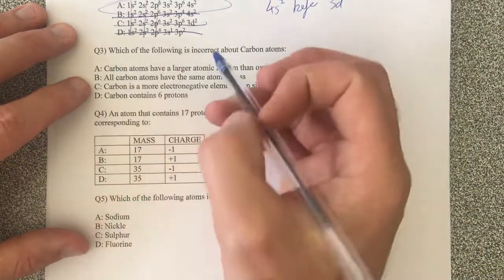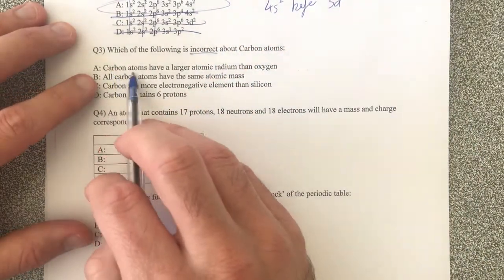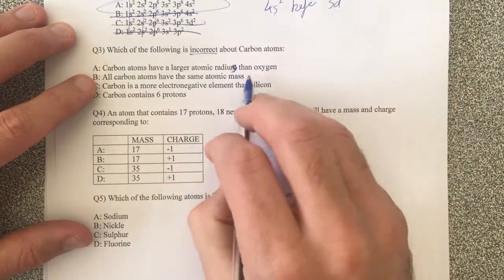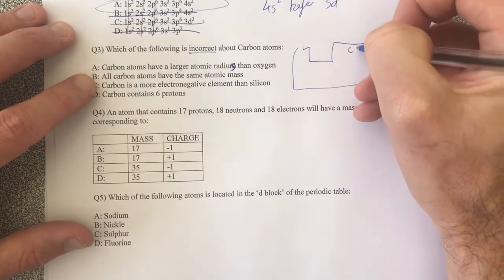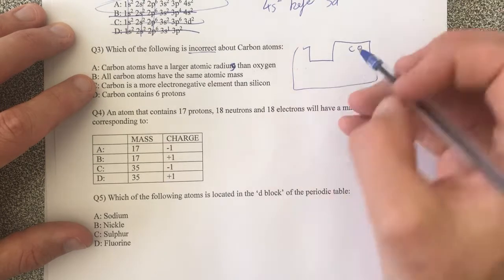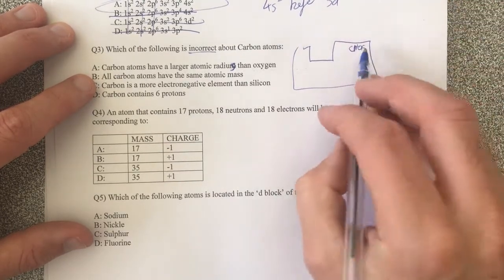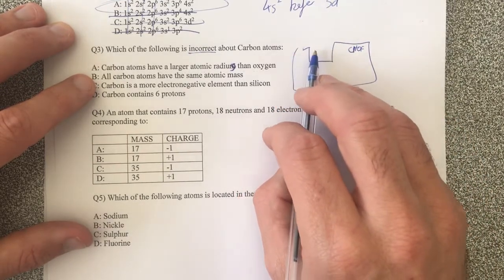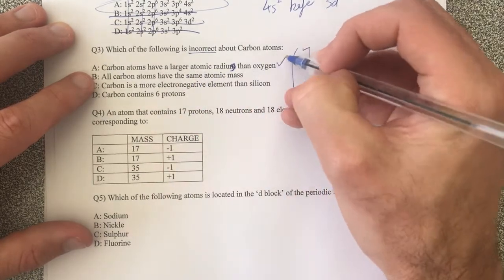Moving on. Which of the following is incorrect about carbon atoms? Well, let's have a look. Carbon atoms have a larger atomic radius than oxygen. Let's have a look. This is our periodic table. Carbon sits here. Oxygen is to the right of it. Goes carbon, nitrogen, oxygen, fluorine. And you can see that as we move across, we have a decrease in atomic radius. So therefore carbon should have a larger atomic radius. That's correct.